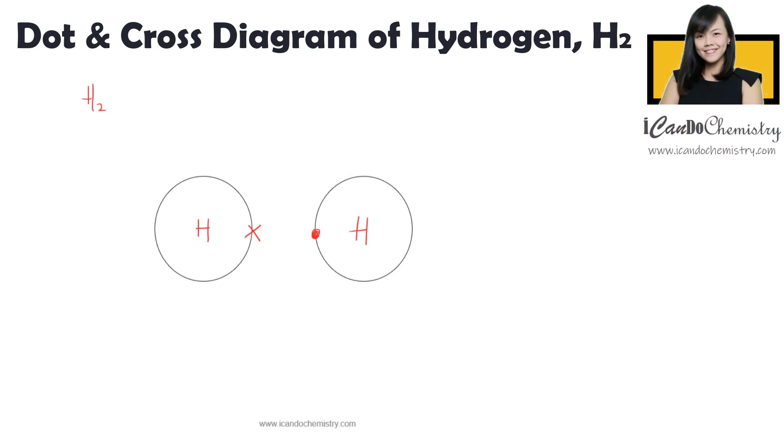But hydrogen in this case, each of this hydrogen has one electron shell and it only has one electron in the shell. It has not attained noble gas electronic configuration. It needs to undergo chemical reaction to form a covalent bond.